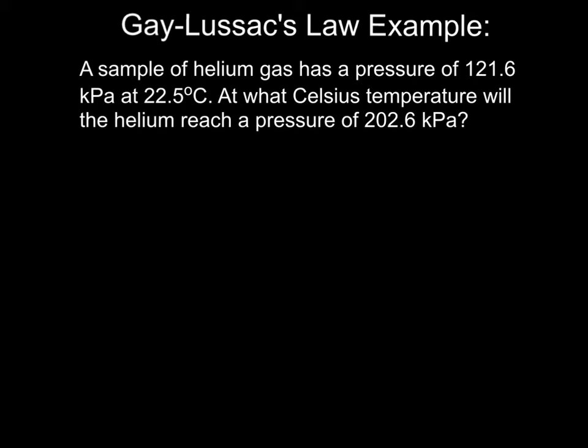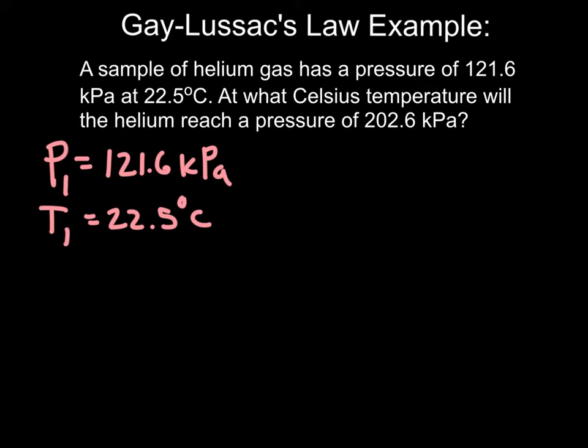So just like last night, we're going to take a look at an example. Please take a moment and copy it down. As we read, we're going to create our list of variables, just like we did in the other lecture, part one. So we have this sample of helium gas. It has a pressure of 121.6 kilopascals. And this is at a temperature of 22.5 degrees C. And as we continue reading, we can tell that we're going to have another temperature and another pressure, so I added the ones here. This asks us what Celsius temperature will the helium reach when it has a pressure of 202.6 kilopascals. And we don't know the second temperature.